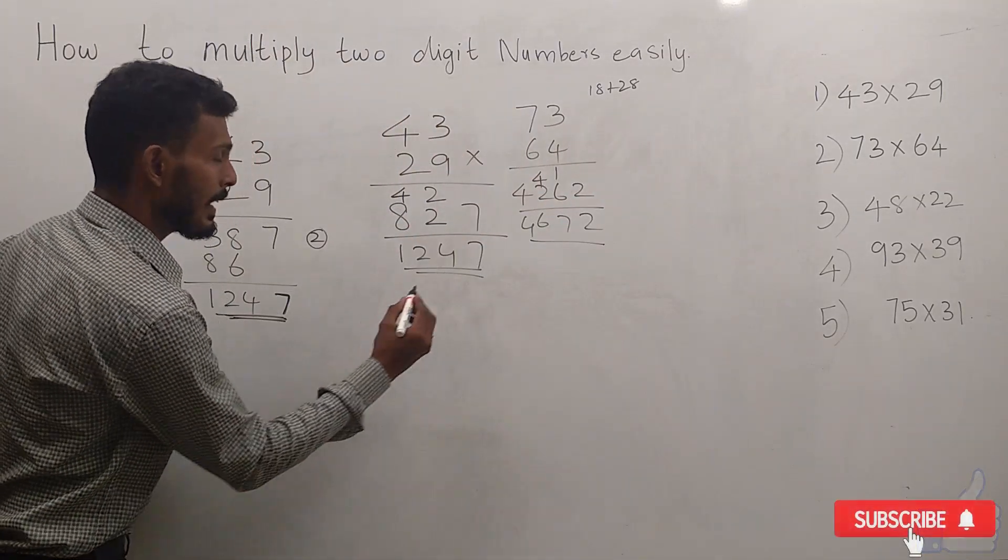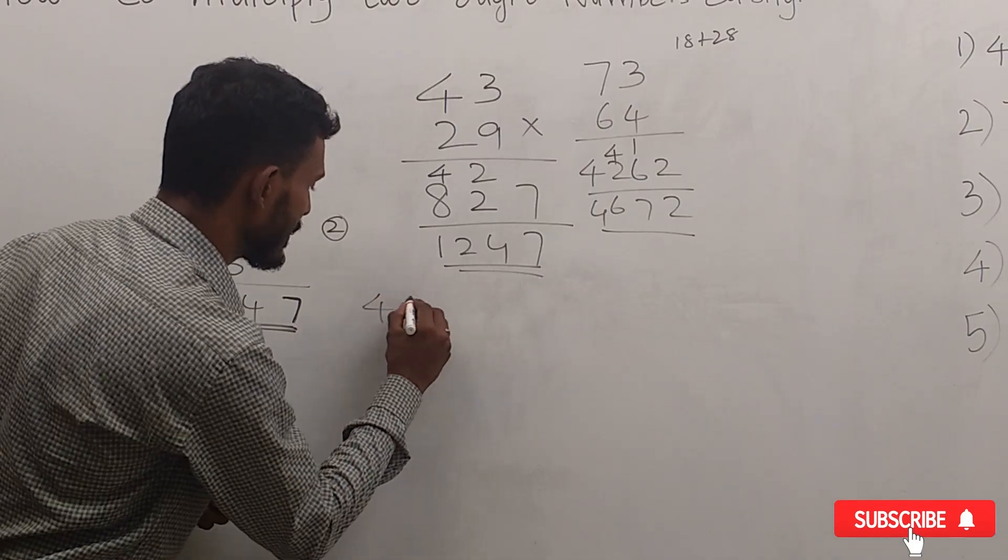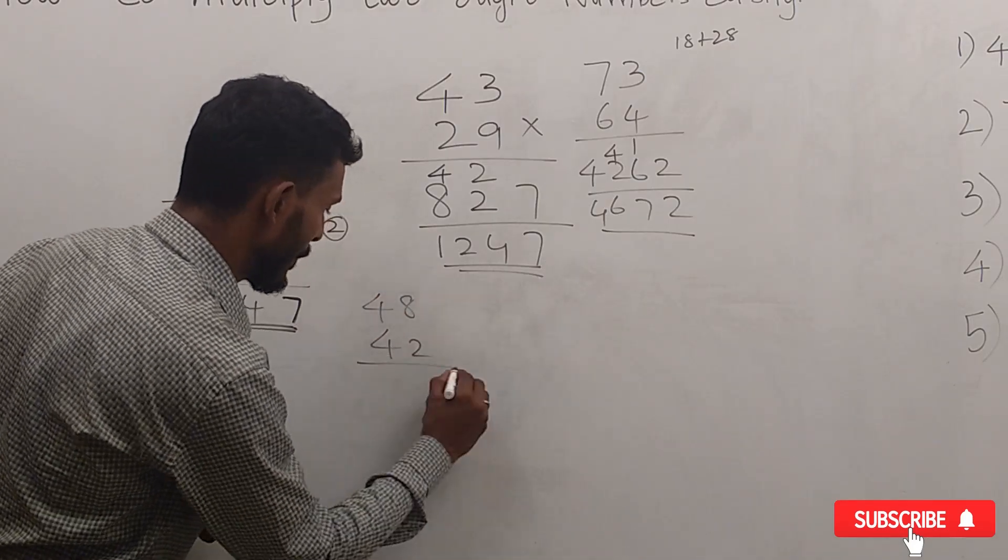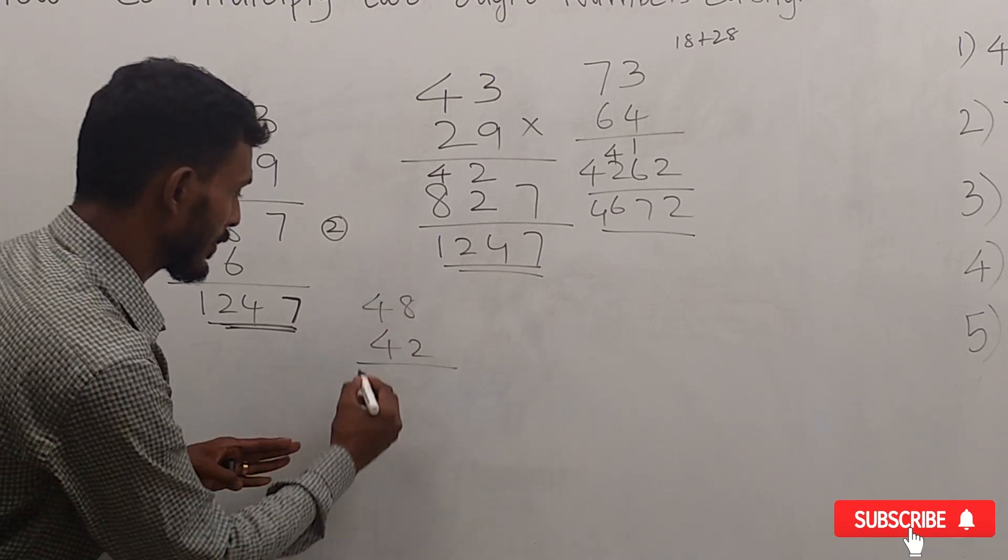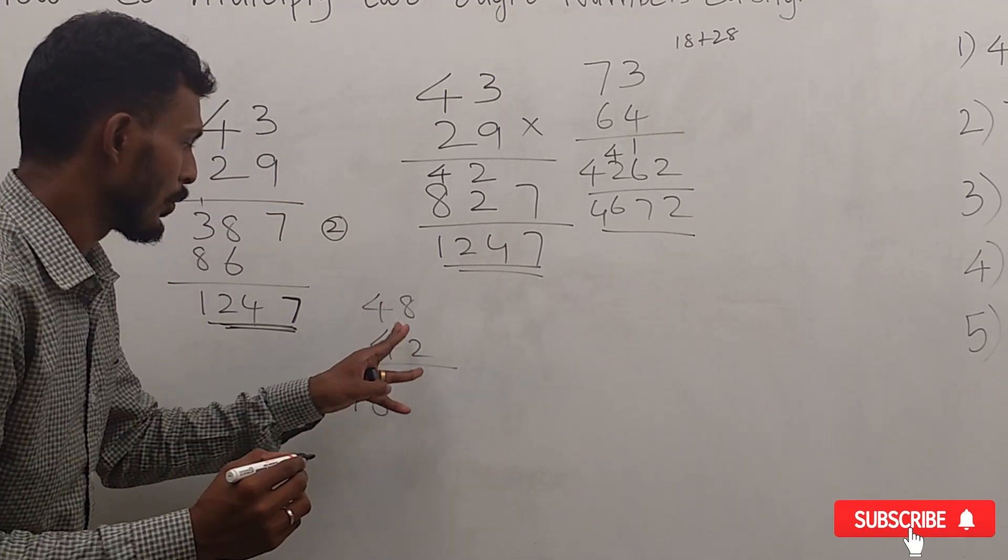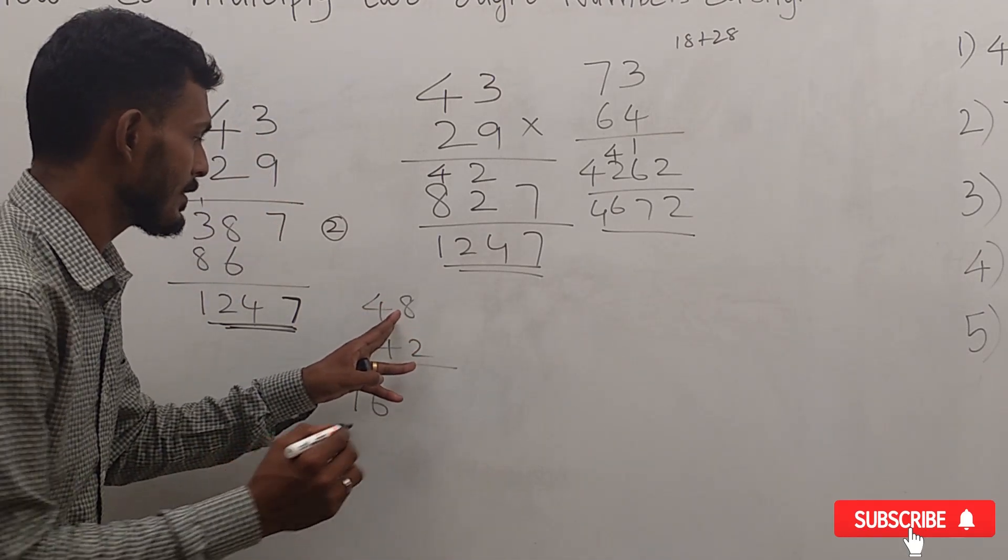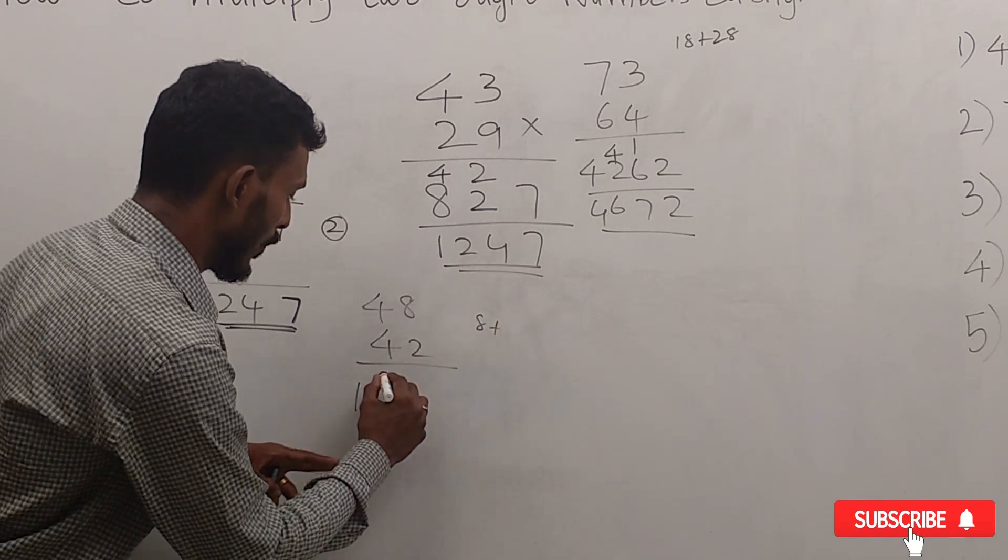For the next one, 48 × 42. 4 × 4 = 16. 2 × 4 = 8, plus 8 × 4 gives us 40.